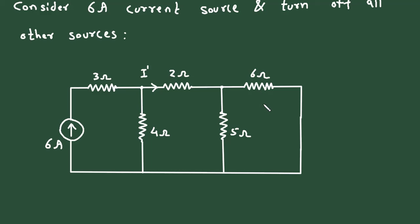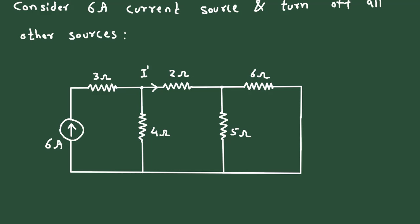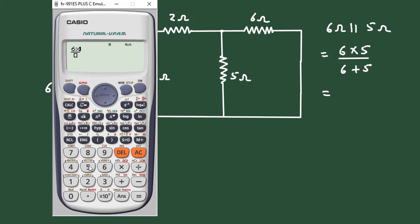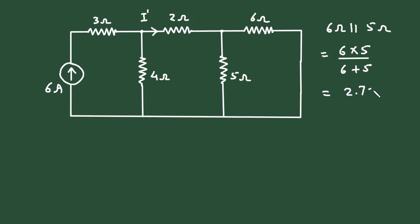Now as we can see here, this 6 ohm and 5 ohm are connected in parallel. So we can write 6 ohm parallel with 5 ohm: it will be 6 into 5 divided by 6 plus 5 ohm. So it is 2.72 ohm.